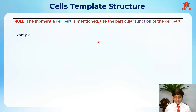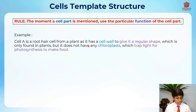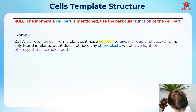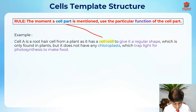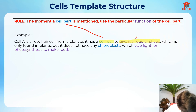An example is like this: Cell A is a root hair cell from a plant, as it has a cell wall to give it a regular shape. See here — we are mentioning the cell part, and then we mention the function, highlighted in the same color.